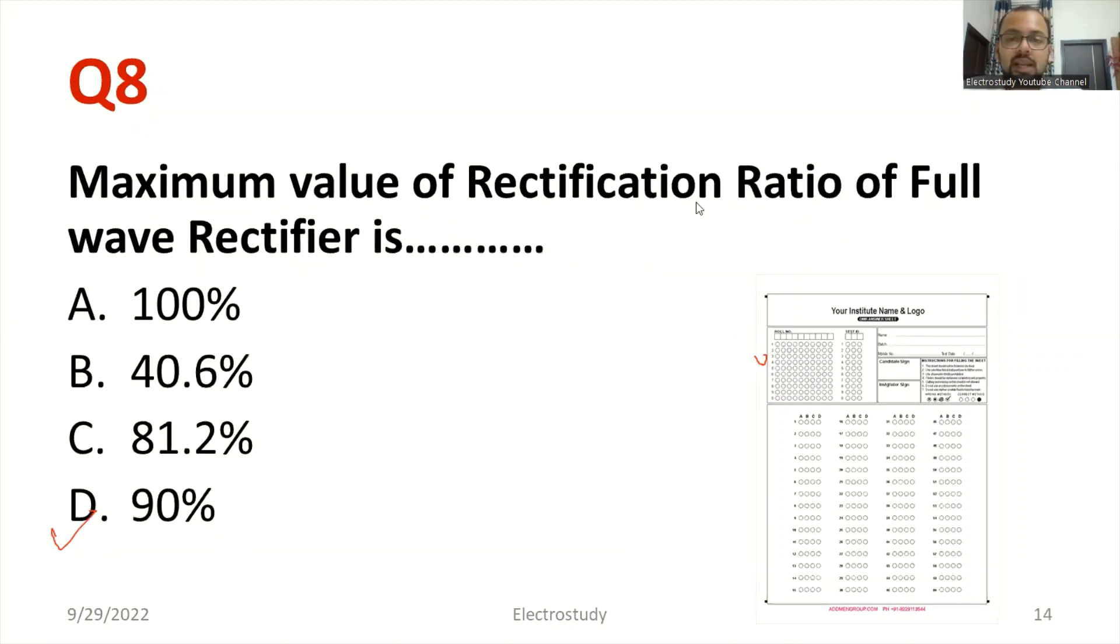Moving ahead. Maximum value of rectification ratio for full-wave rectifier. What is rectification ratio? It is nothing but efficiency. What is the value? So the right answer is you can select 81.2%. 81.2 is the right answer. Go for option C.